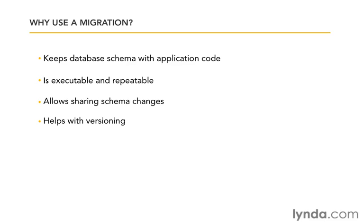It also helps with versioning. If you're using a version control system like Subversion, Git, or CVS, this allows you to not only roll back the code to a certain state by checking out a previous revision, but you can actually then migrate your database to that state and back again when you're done.